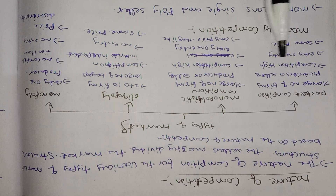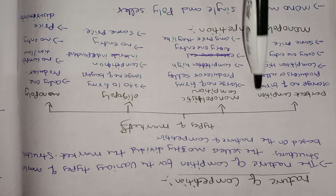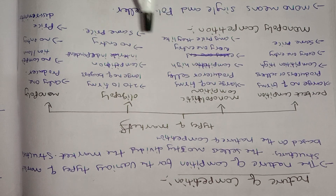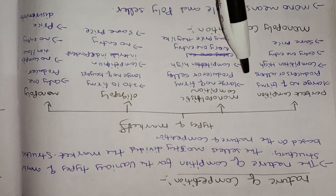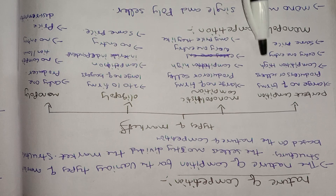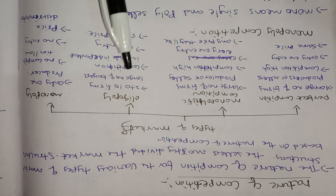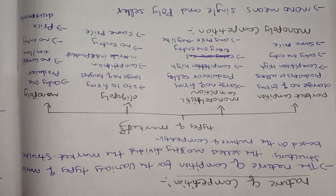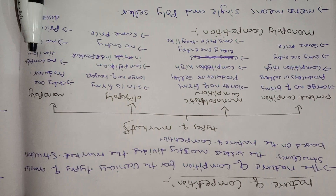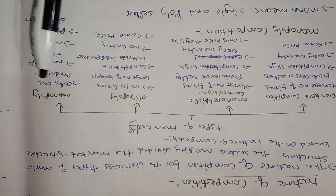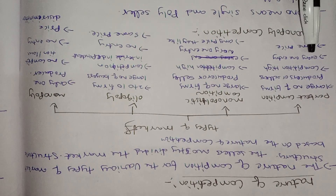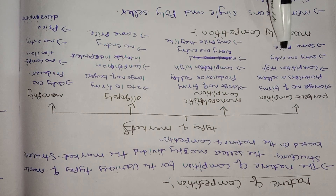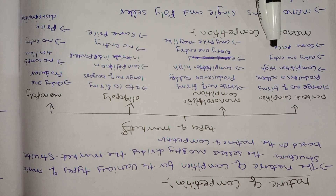In perfect competition, competition is high — there are many producers and many companies. Competition is interdependent between two to ten firms. There is no competition in monopoly because we are selling only a single product. In perfect competition, everyone can enter. There are rules and regulations for entry.